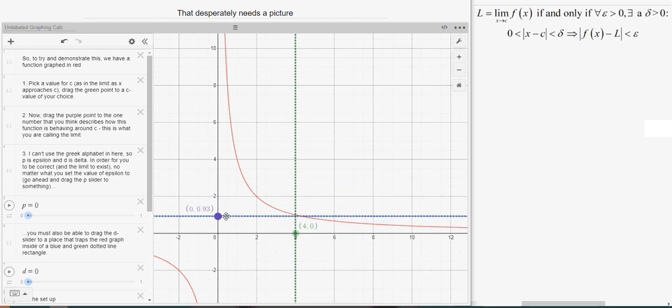That to me appears to be about 1. If I could get that to lock in at 1. So the one number that describes what this function is doing around 4 is the number 1.